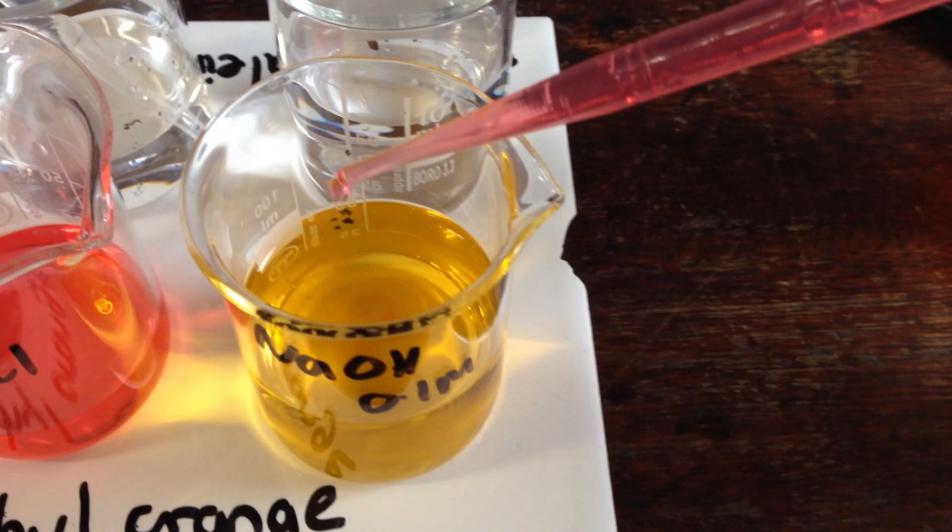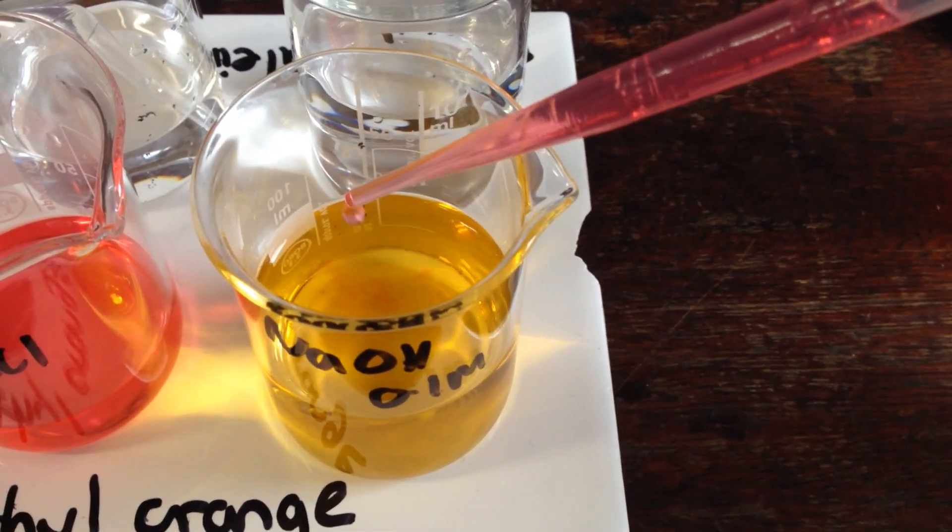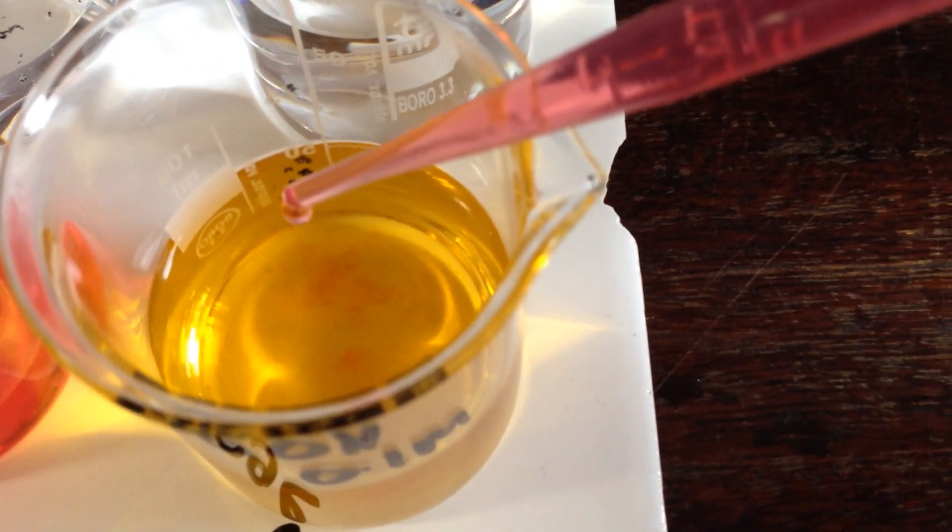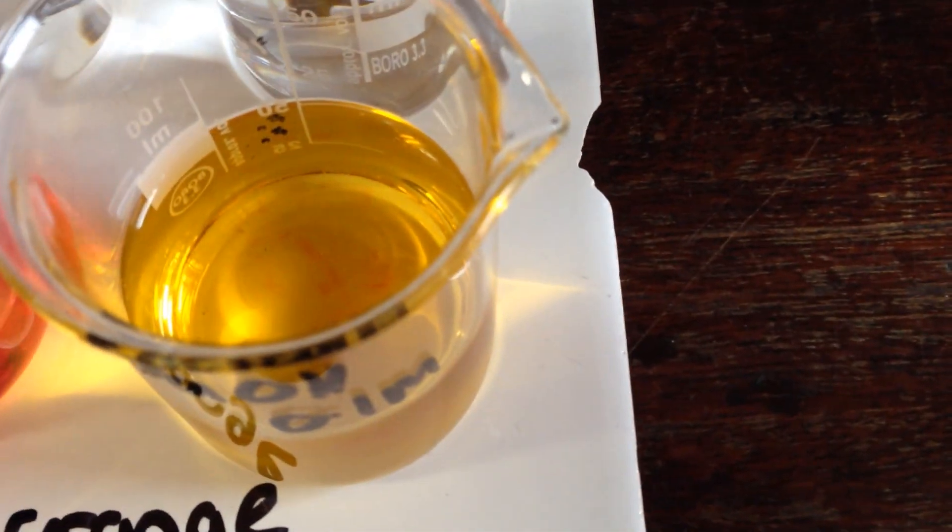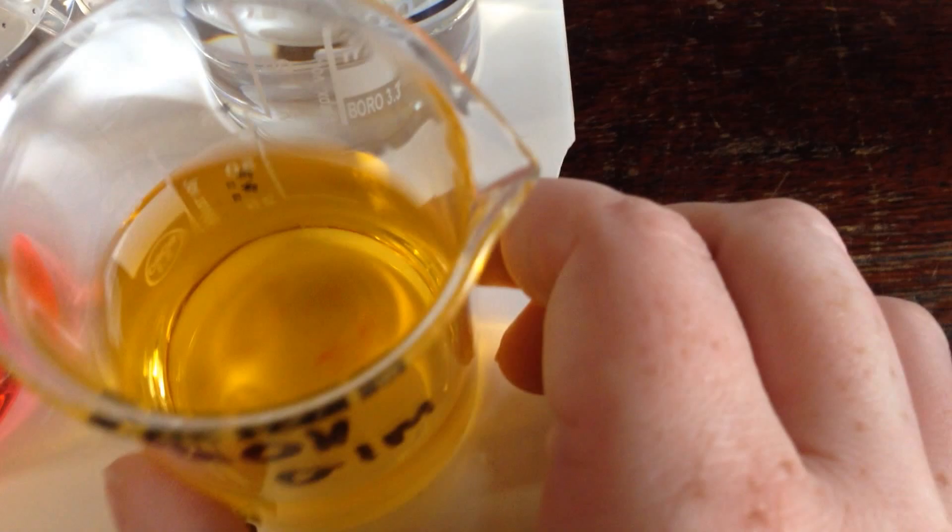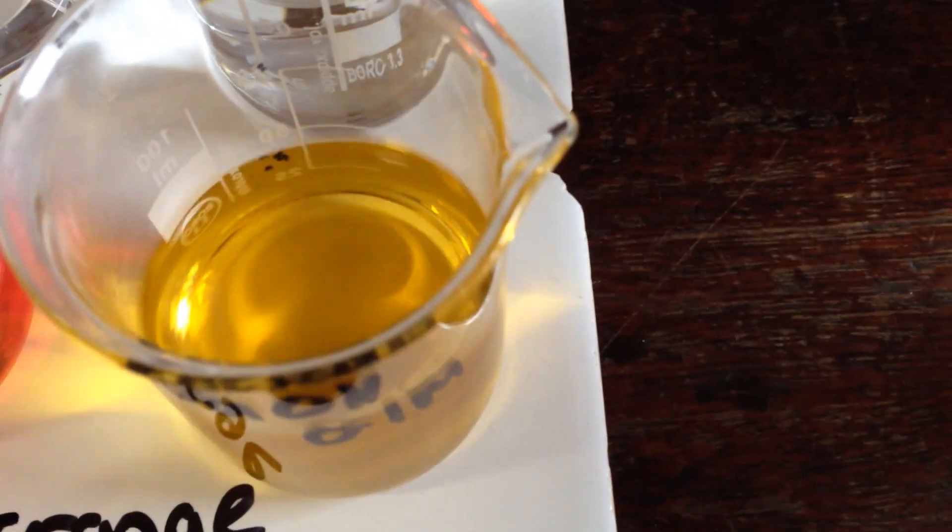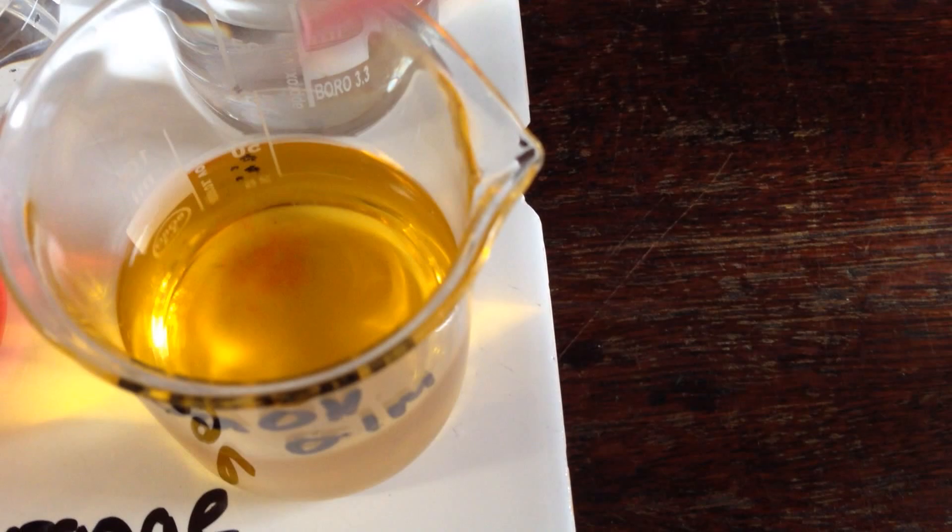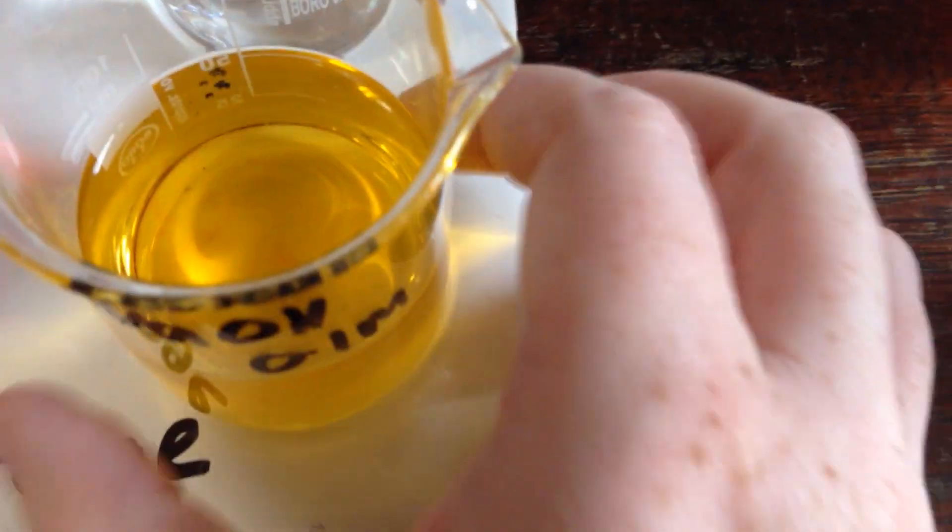The color change for methyl orange is a lot harder because red and yellow are quite similar colors. But hopefully if I go in close, you can see that the drops of red that I'm adding—adding the acid to the alkaline—when I swirl them, they do disappear. Adding in drop by drop, you can see it's starting to get darker.